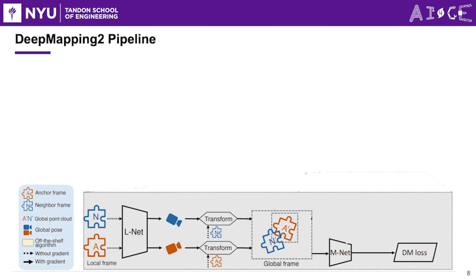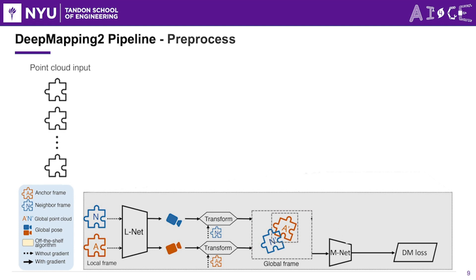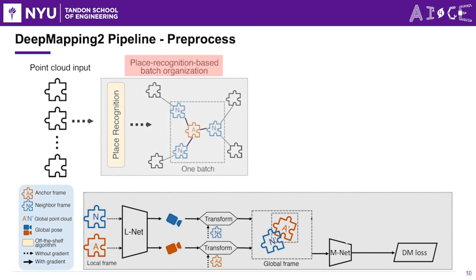This is our DeepMapping 2 pipeline, containing the original DeepMapping architecture including both Lnet and Mnet. A series of point clouds is used as the system's input. We can create a map topology using any off-the-shelf place recognition technique and use it to organize the batch. To tackle the absence of explicit loop closure, the proposed solution involves utilizing spatial topology to construct batches, thereby incorporating implicit loop closure. Each batch is composed of a frame and its spatial neighbors, ensuring better contextual information.